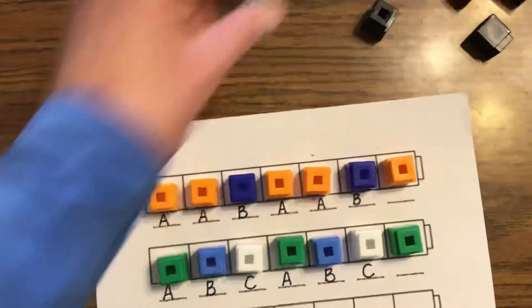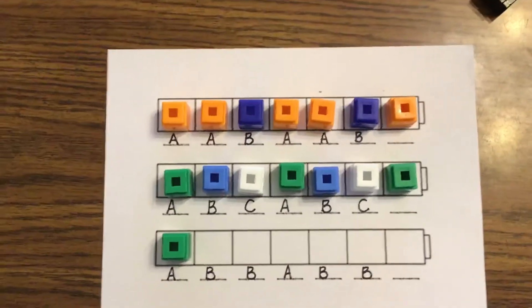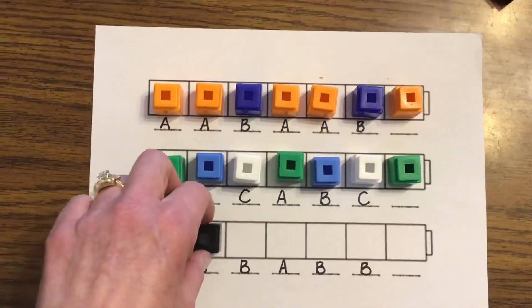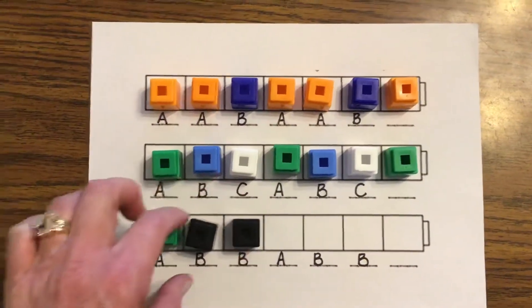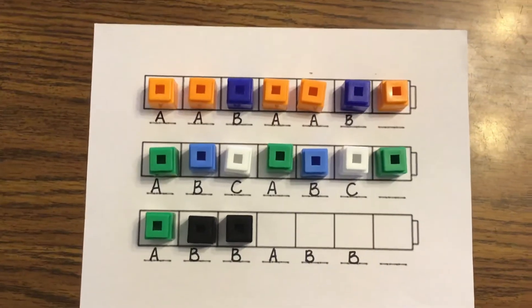I'm going to pick green for my A and my two B's are going to be the same color. So I'm going to do black, black, black. Oh, you know what? Black starts with B, doesn't it? B, black, B.